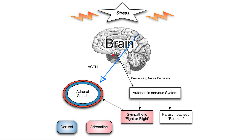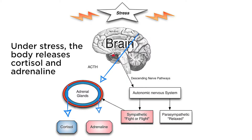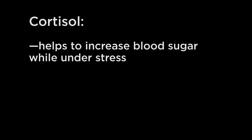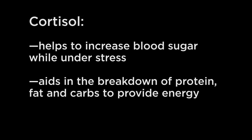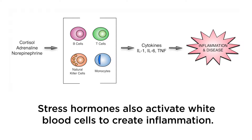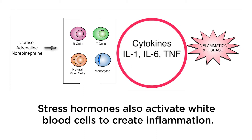Under times of stress, the brain activates the adrenal glands to secrete cortisol and adrenaline. Cortisol has multiple functions: it helps to increase blood sugar, aids in the breakdown of fat and carbs to provide energy, and acts as a major anti-inflammatory hormone. Cortisol and other stress hormones activate white blood cells to create inflammatory compounds called cytokines, which are linked to inflammation and disease.